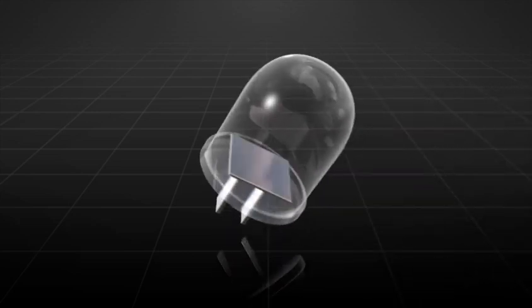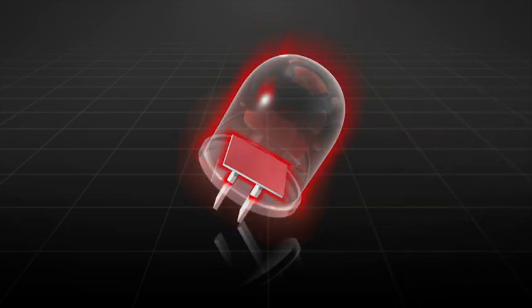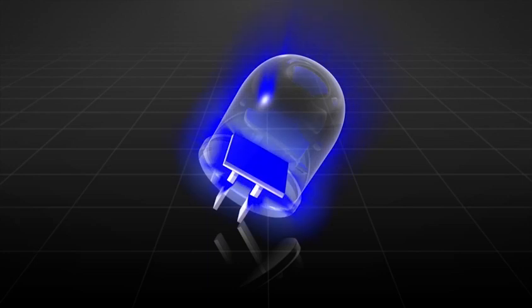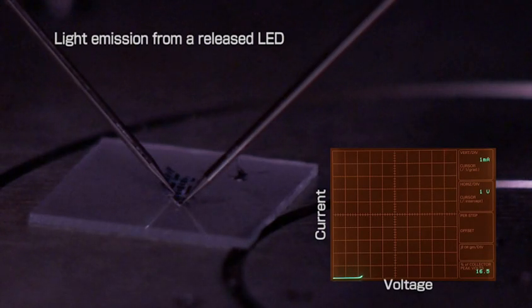As a result, for example, a gallium nitride-based thin film device can be transferred onto a red LED made of completely different material. This realizes an LED that can emit two different colors.